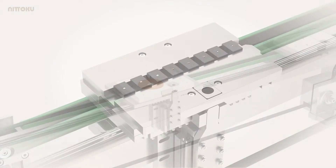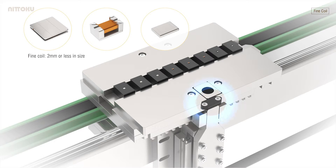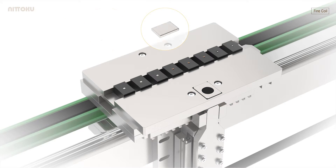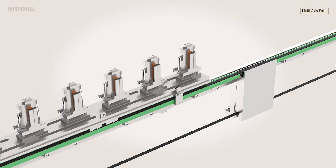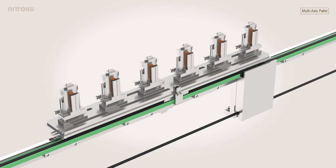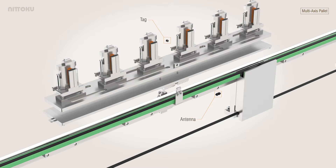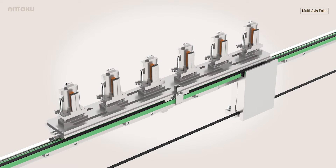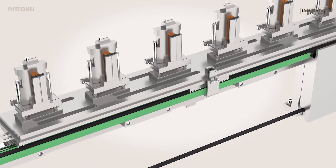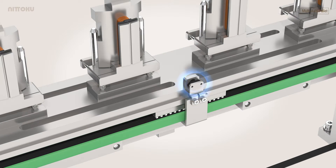FA tags are used when the QR code cannot be printed, or when a separate controller is used for each process. The FA tag is also valid for a multi-axis production line.